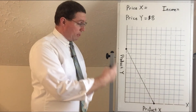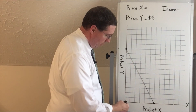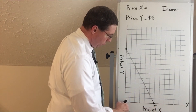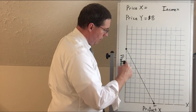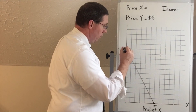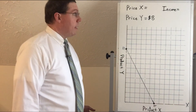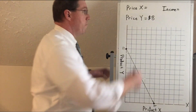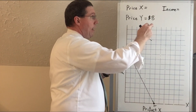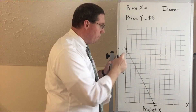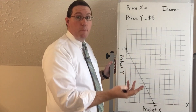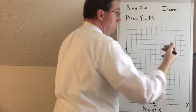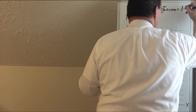Let's do one more example where I give you the price of only one product but not the other and not the income. Counting the endpoints: the x-axis end has 6 units of product X, and the y-axis end has 11 units of product Y. We don't know the income or price of X, but we do know the price of Y is $8. At $8 per unit, we can purchase 11 of them, so we multiply: 11 times $8 equals $88. This household must have $88 in income.